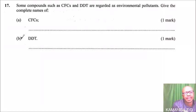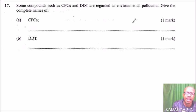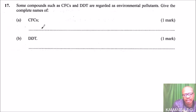Question number 17. Some compounds such as CFCs and DDT are regarded as environmental pollutants. Give the complete names of CFCs and DDT. Let's start with the CFC.